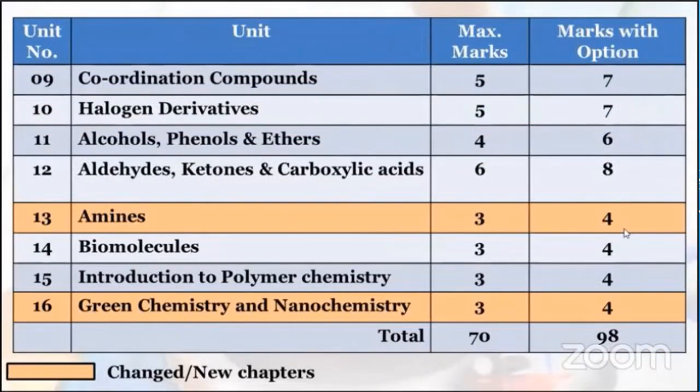Chapter 9: Coordination Compounds — maximum marks 5, along with option 7. Chapter 10: Halogen Derivatives — maximum marks 5, along with option 7. Chapter 11: Alcohols, Phenols and Ethers — maximum marks 4, along with option 6. Chapter 12: Halogen Derivatives — maximum marks 6, along with option 8.